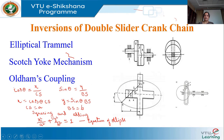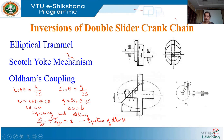We will discuss these one by one. The elliptical trammel — the name itself indicates that this instrument is used to draw an ellipse. In the elliptical trammel, there is a fixed frame, and in this fixed frame there are slots. This is the slotted fixed frame, and these two blocks slide inside that slotted fixed frame.